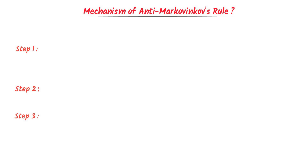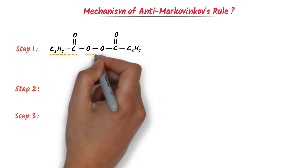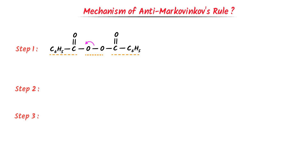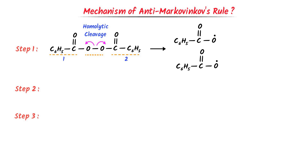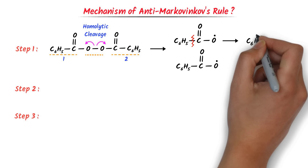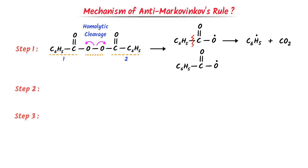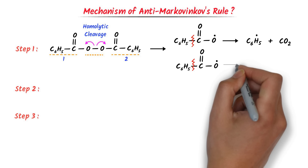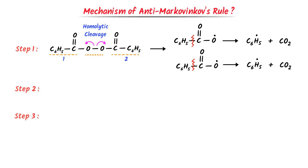Now what about the mechanism of anti-Markovnikov's rule? I follow four steps for its mechanism. In the first step, I take benzoyl peroxide — the benzoyl part, the peroxide part, and the benzoyl part. Each oxygen withdraws its own electron and the bond breaks. We call such bond breaking homolytic cleavage. We get two free radicals. Then homolytic cleavage also occurs in each benzoyl part, giving us phenyl free radicals and carbon dioxide gas.